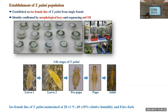Thrips parvispinus generally undergoes different life stages: first instar larvae, second instar larvae, prepupa, pupa, and adult. We maintained our population at 28 degrees Celsius, 60 percent relative humidity, and 16 hours of light.